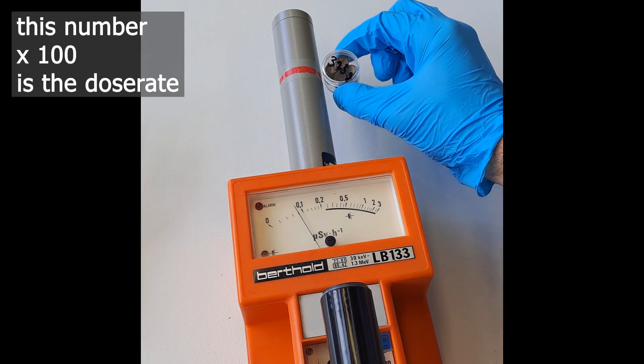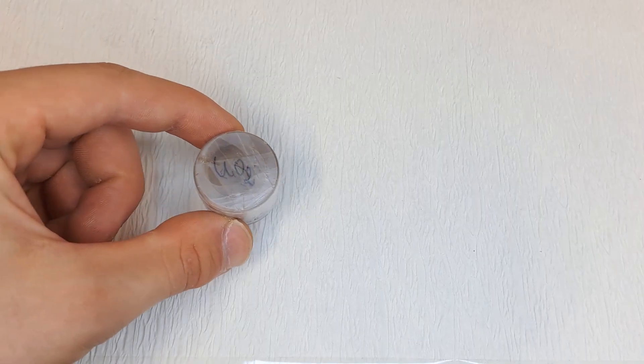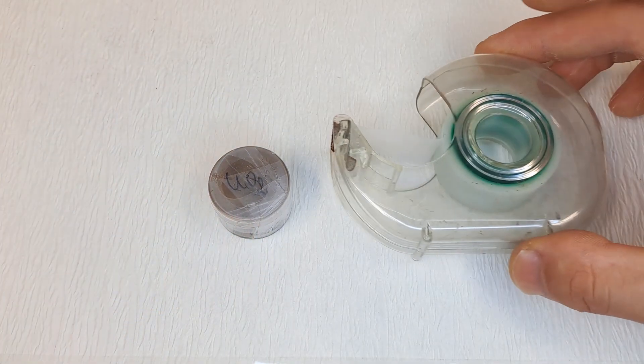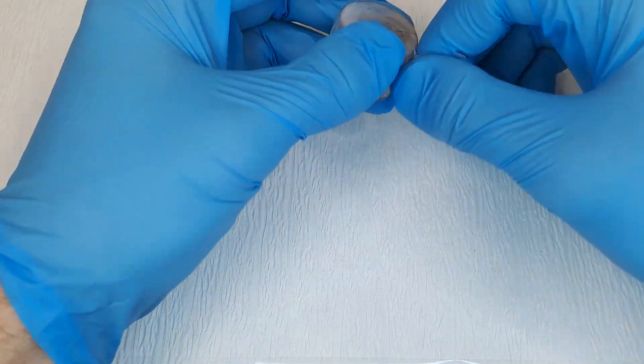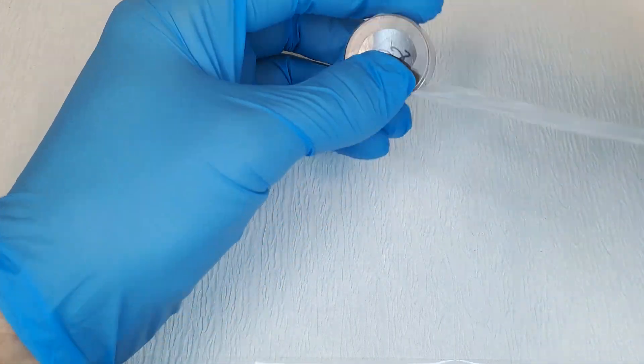Of course, it requires analysis to determine what's actually in it. So I took some uranium dust and carefully fixed it to a strip of adhesive tape. Why? I'm about to take an alpha spectrum of it.